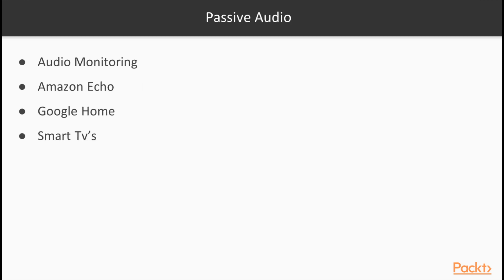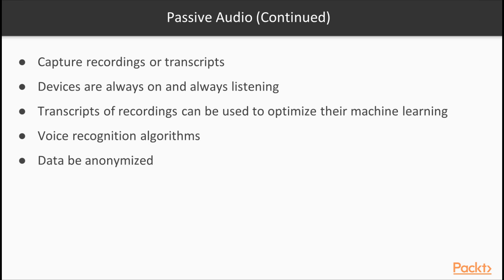The same and even more can be said of audio monitoring. In the case of smart home assistant devices, consumers seem to be willing to invite these into their homes — devices such as Amazon Echo, Google Home, or even smart TVs by major manufacturers like Samsung. In many instances, we take the manufacturer at their word that they are only keeping recordings or transcripts captured after a specific wake word. These devices are always on and always listening. Vendors will often use the transcripts of recordings to optimize their machine learning and voice recognition algorithms. It's important that this data be anonymized, but what assurances do consumers have in this regard?